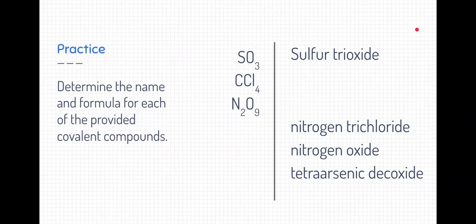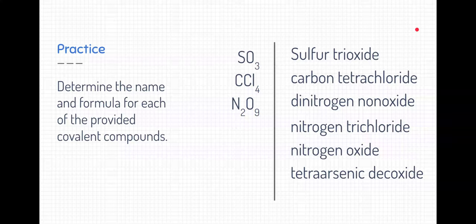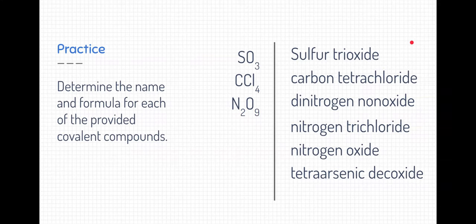How about CCl4? Do you think you can figure this one out? Well, this one's name is carbon tetrachloride. Again, one carbon and four chlorines. The next one, N2O9, is dinitrogen nanoxide. A little bit of a mouthful, but that's how you say that, nanoxide. So two nitrogens, dinitrogen, nine oxygens, nanoxide.